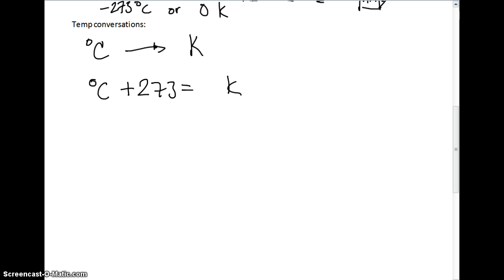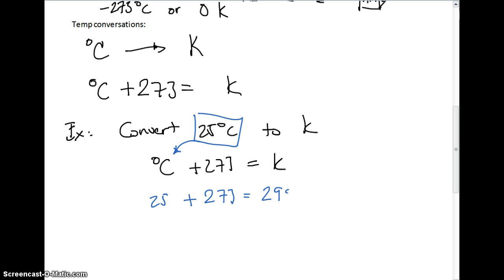So here's an example problem. Convert 25 degrees Celsius to Kelvin. Okay, so this is a pretty easy problem. What we're going to do is we're going to use the formula. Degrees Celsius plus 273 equals Kelvin. And I'm just going to take the value for 25 degrees Celsius, and I'm just going to plug it in right there. So I'm going to get 25 plus 273, and it's going to give me 298 Kelvin as an answer.